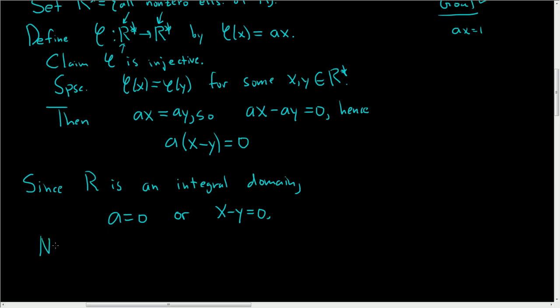Note a is not zero, so x must equal y. We said a was nonzero at the beginning. So this shows φ is injective, or one-to-one.